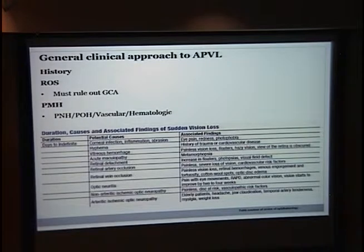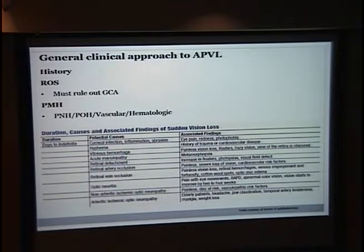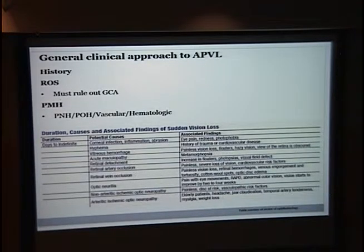For the general clinical approach, you want to do your basic history. Ask about associated pain, photopsia, or any new onset floaters, and how acute it was — sometimes patients accidentally close one eye and discover vision loss they think is sudden. One of the most important things in terms of review of systems is to rule out giant cell arteritis or temporal arteritis, because you want to possibly save the other eye. Past medical history should include neurological history, since any history of tingling might suggest an MS-related issue, and also past ocular and family history. Consider comorbidities such as hypertension, diabetes, and any hematological abnormalities.